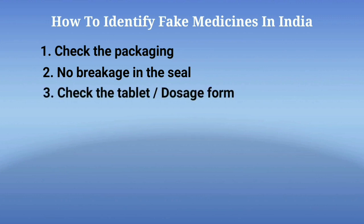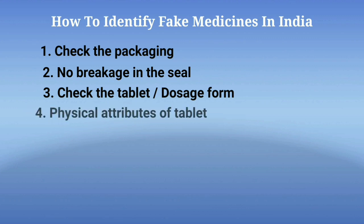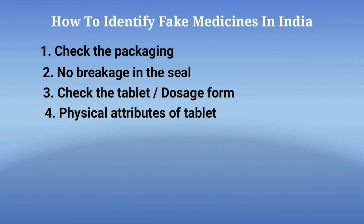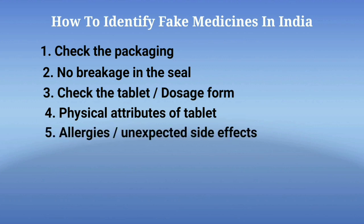Check the tablet or dosage form — look for dissimilarities in the physical appearance of a drug, like color, size, uniformity, consistency, shape, etc. The common physical attributes to look for in medicine tablets are: small pieces of tablets, or excessive powder at the bottom of the container, or cracks in the tablets, the appearance of crystals on the container walls or in the tablets, softening or hardening of the medicines, swelling, spots, or discoloration of tablets.